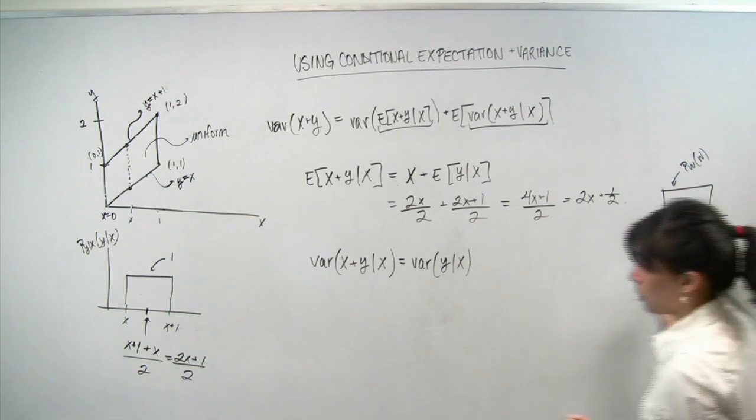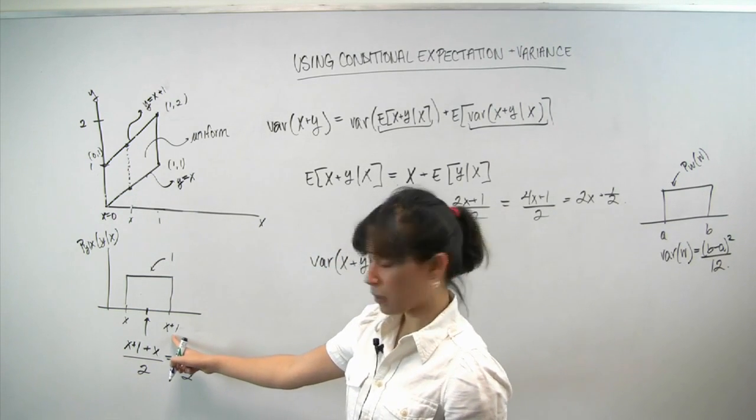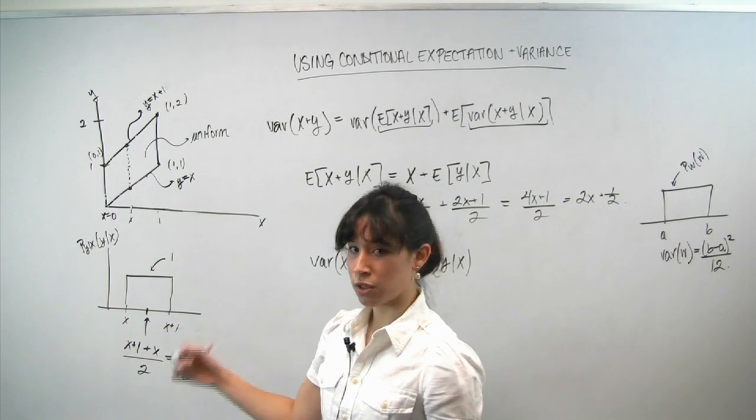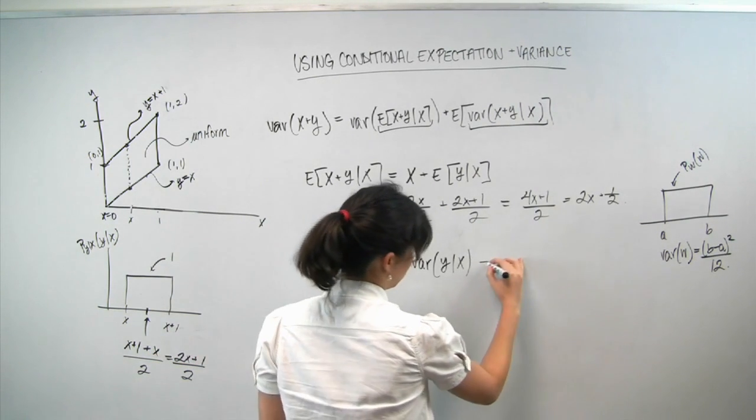We have a formula that says variance of w is equal to b minus a squared over 12. So we can apply that formula over here, b is x plus 1, a is x. So b minus a squared over 12 is just 1 twelfth. So we get 1 twelfth.